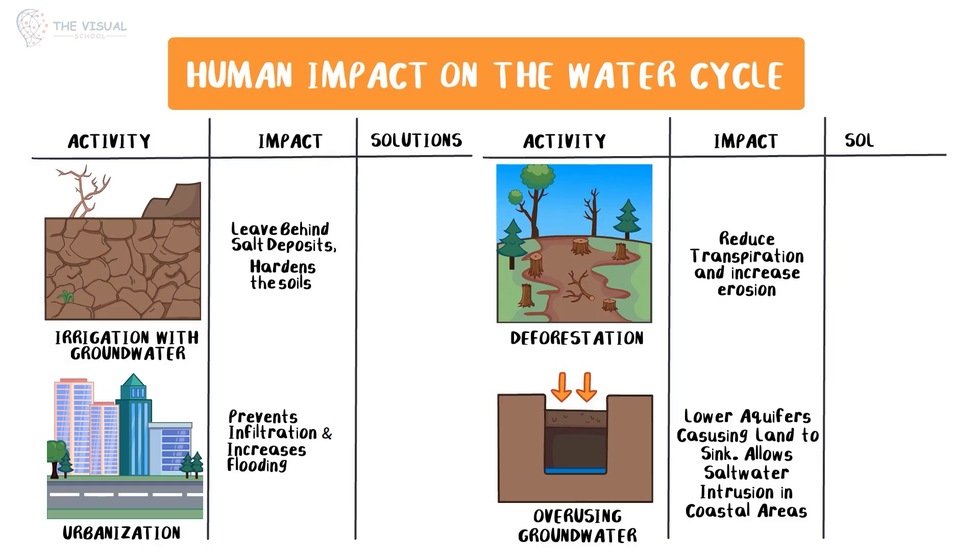But we can reduce our impact by using sustainable farming methods, designing cities to absorb rainwater instead of letting it run off, protecting forests and conserving water.